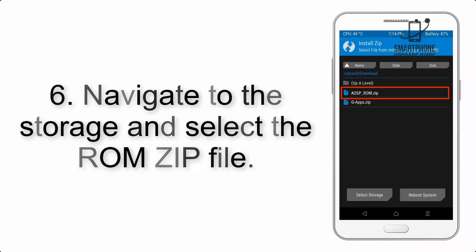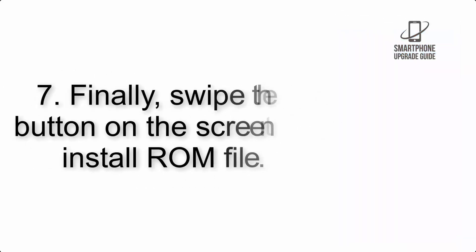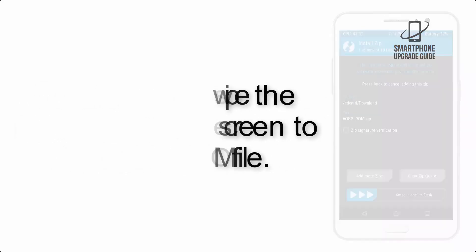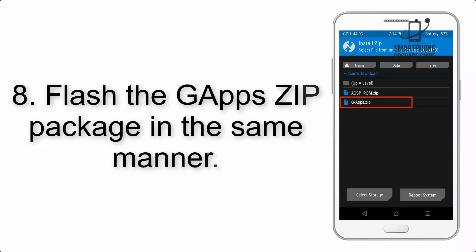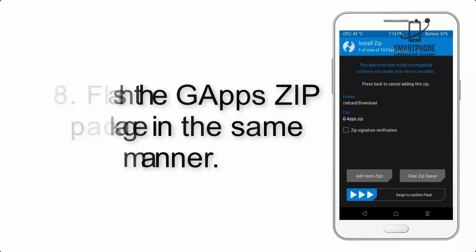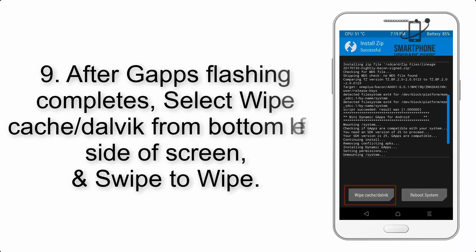Step 5: Go back to the recovery main screen and tap on the Install button. Step 6: Navigate to the storage and select the ROM zip file. Step 7: Swipe the button on the screen to install the ROM file. Step 8: Flash the GApps zip package in the same manner.